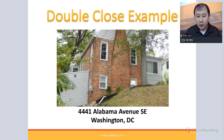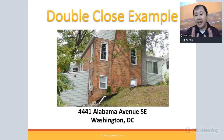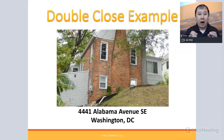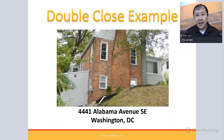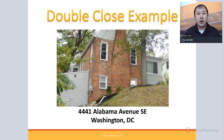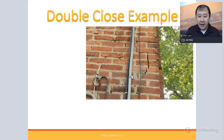Sometimes a contract is not assignable — for example, if the property is acquired through a short sale, auction, or foreclosure. Banks typically require that the contract is non-assignable. In that case, you do what's called a double close: you actually buy the property, then sell it again the next day, next week, or next month — without doing any renovations. You don't even need to turn the utilities on.